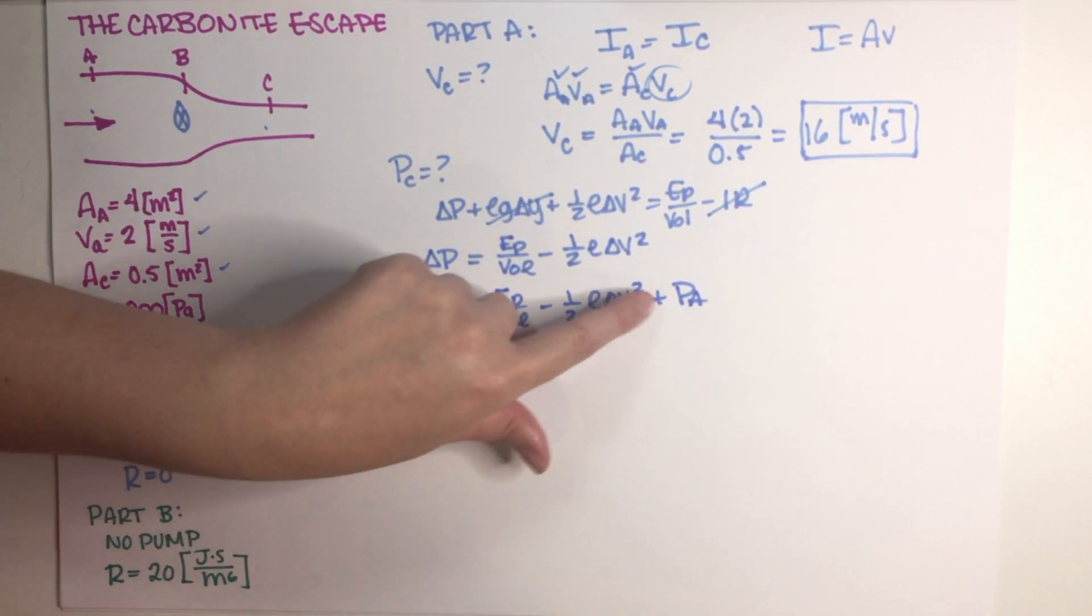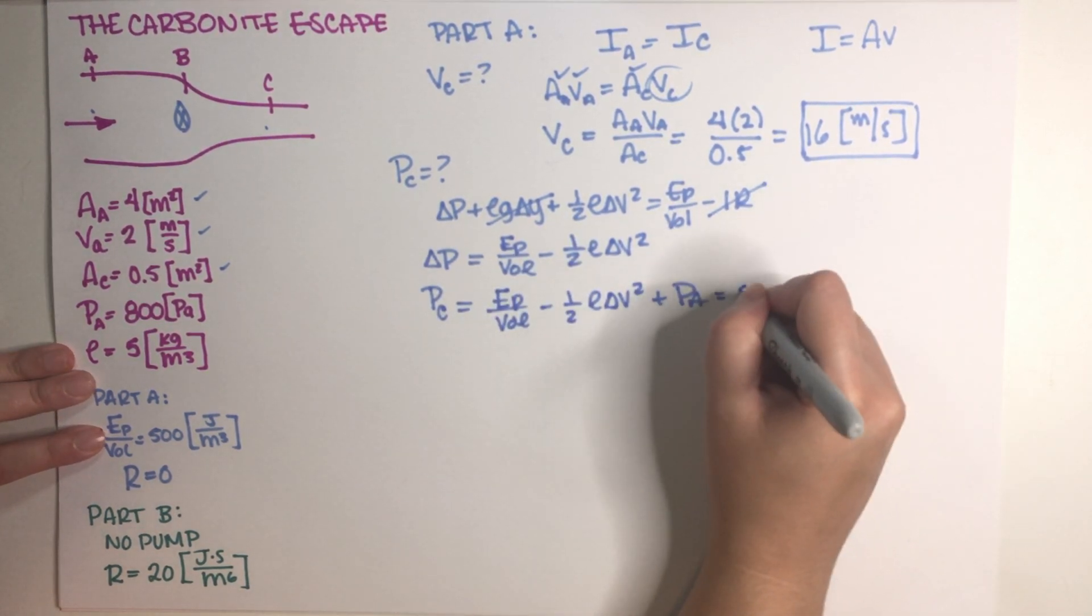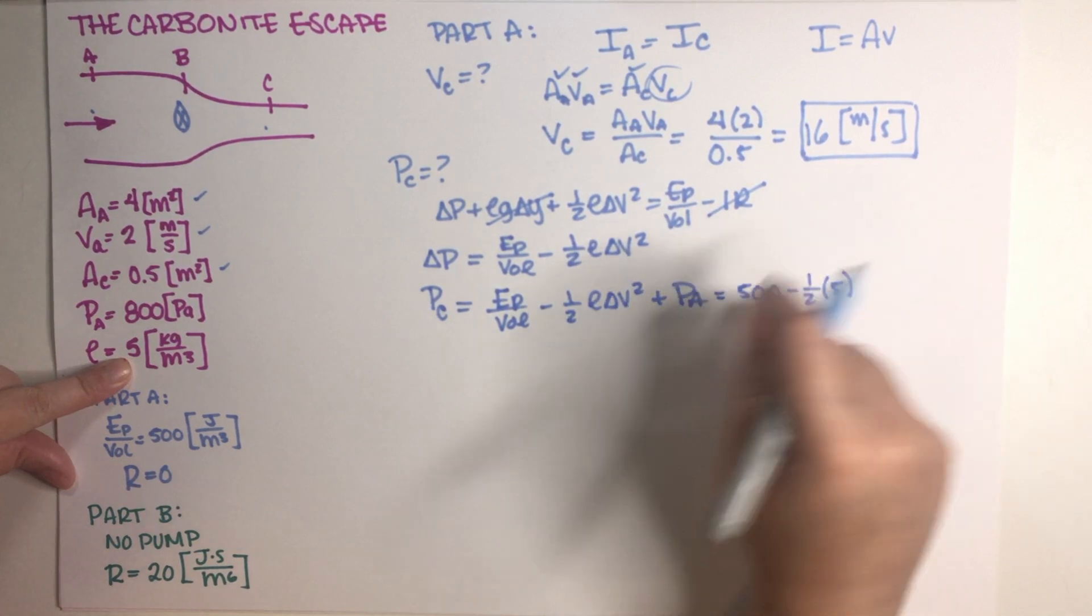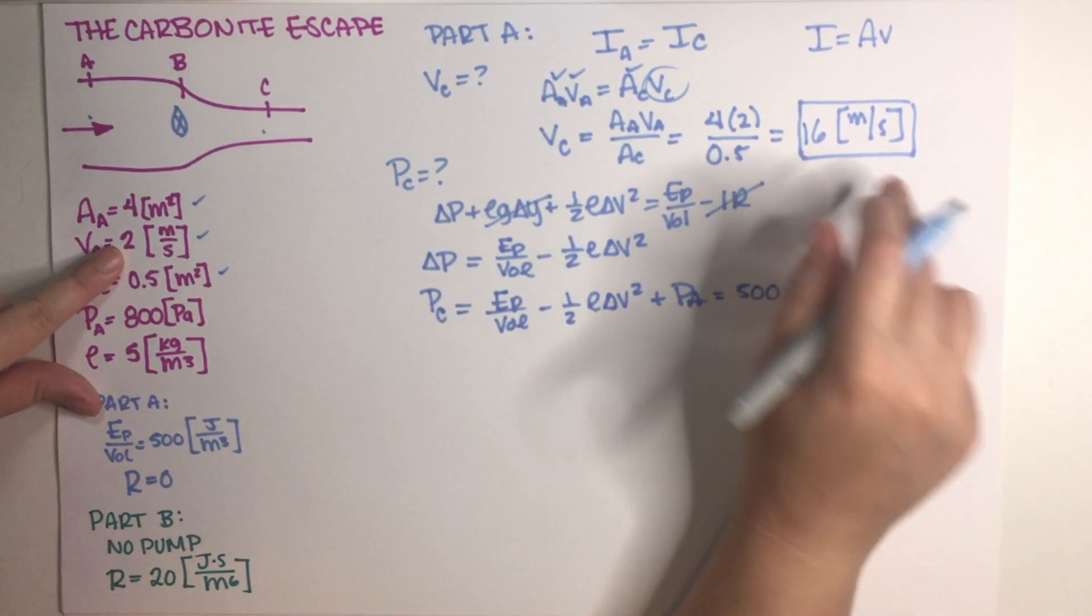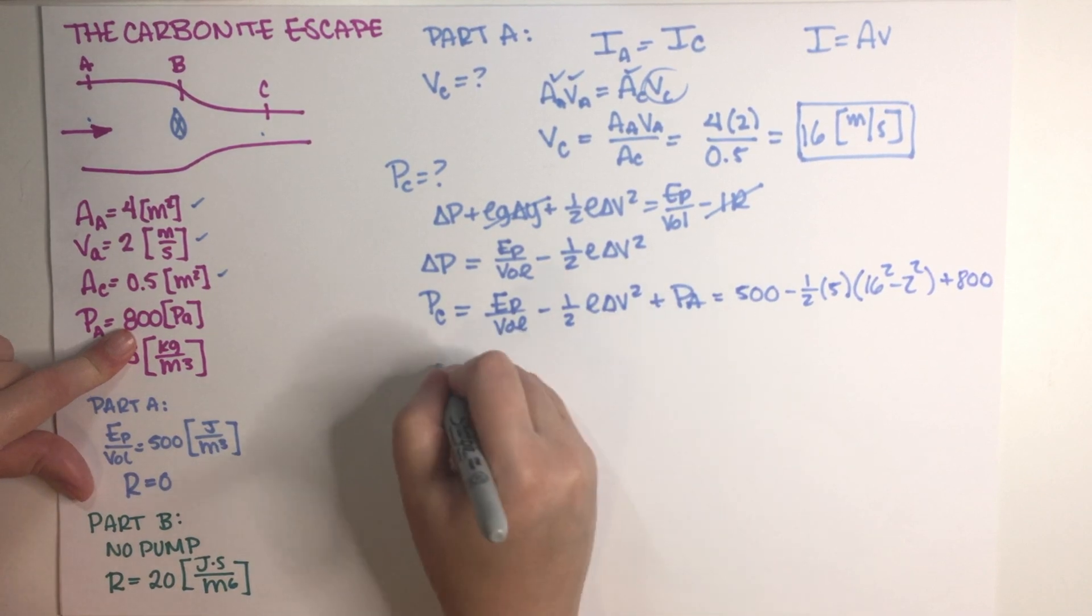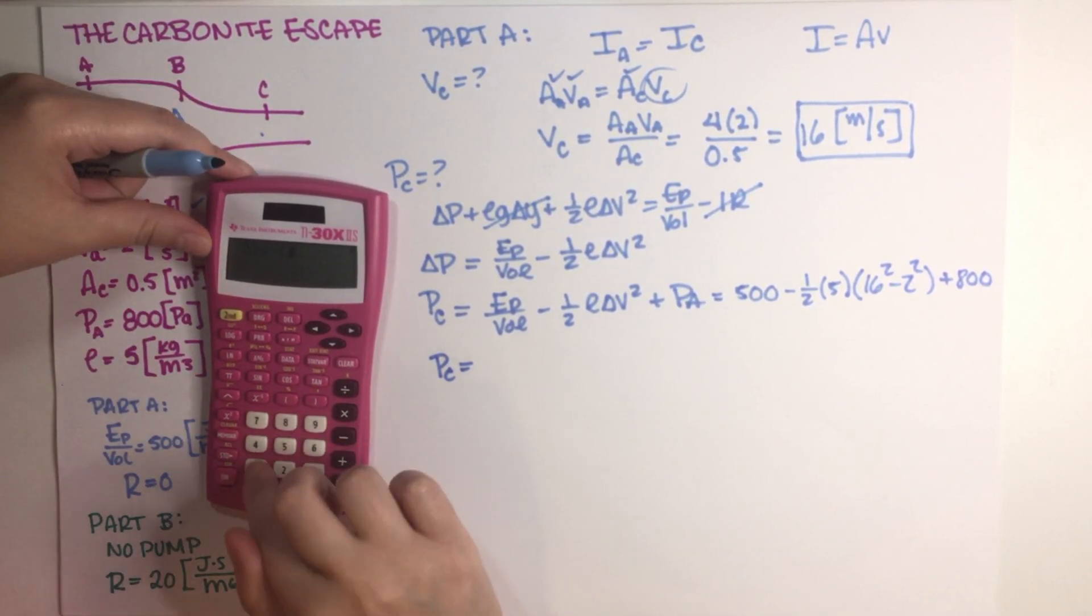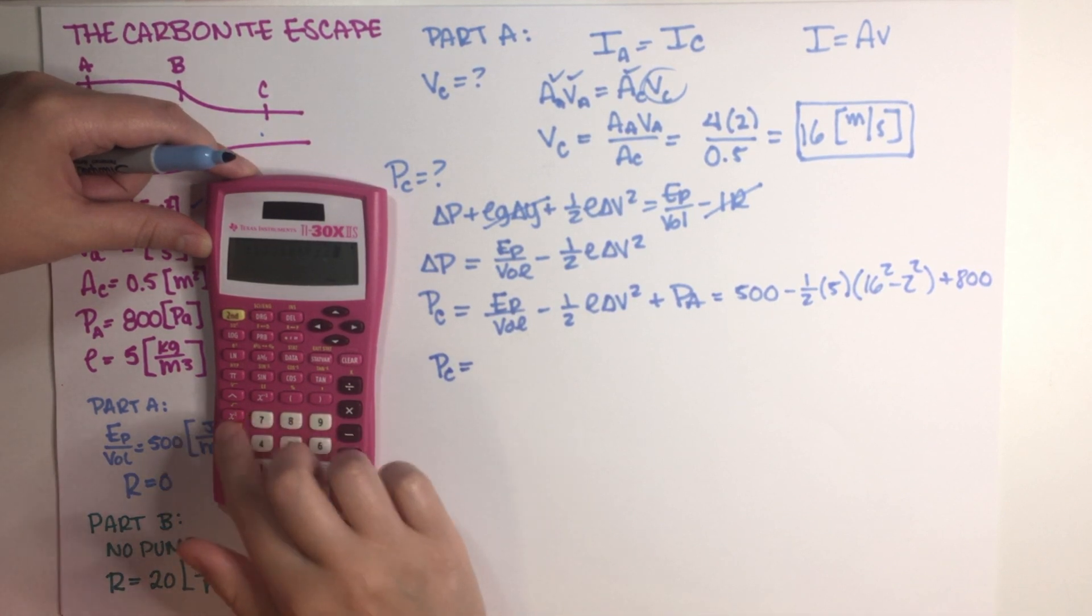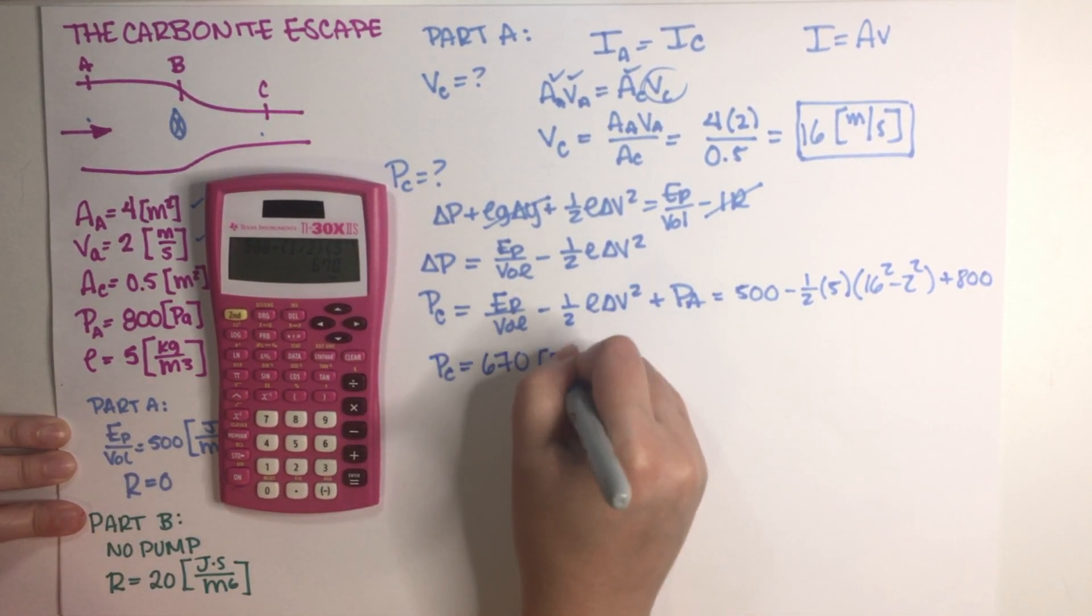This delta P is final minus initial, so it's pressure at C minus pressure at A. And if I send pressure at A to the other side of the equation, it goes as a positive. So let's just put numbers in a calculator. This is 500 minus one-half, density is equal to 5, and then this V squared is final minus initial, so it's 16 squared minus 2 squared, plus what's the pressure at A? 800. So pressure at C is equal to 500 minus one-half times 5 times 16 squared minus 2 squared plus 800. That is equal to 670 pascals, final answer.